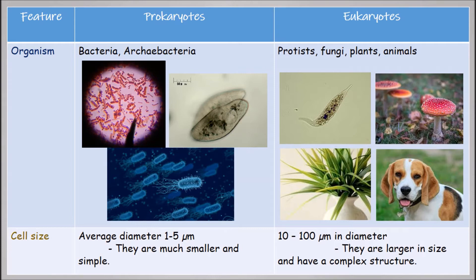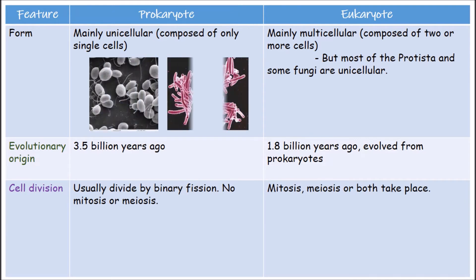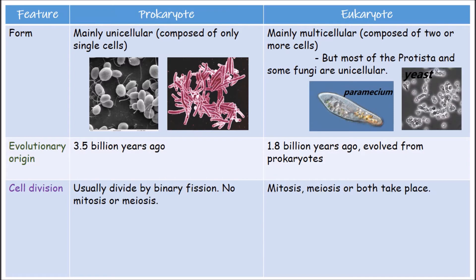The average diameter of a eukaryotic cell is about 10 to 100 micrometers. They are larger and have a complex structure compared to prokaryotic cells, with a smaller surface-to-volume ratio, meaning nutrients can't diffuse as rapidly to the interior. Prokaryotes are mainly unicellular, while eukaryotes are mainly multicellular — composed of two or more cells — though most protists and some fungi are unicellular.